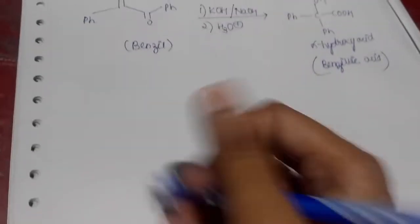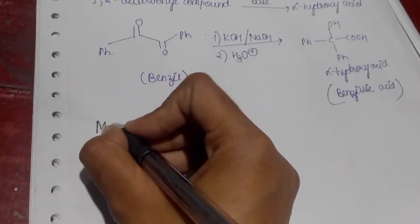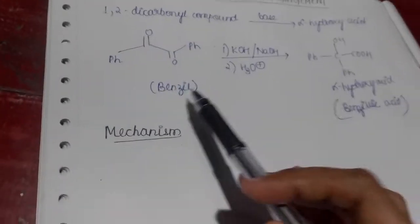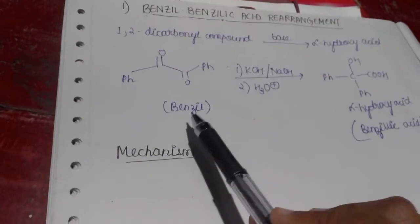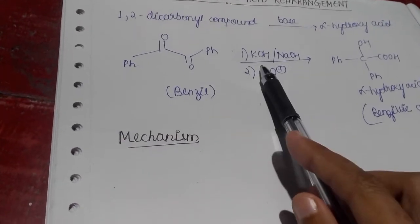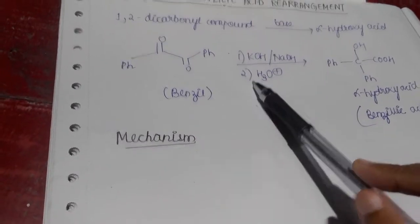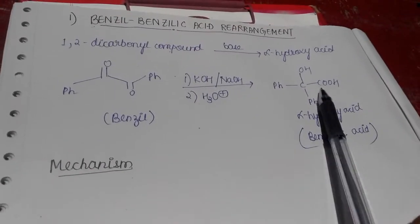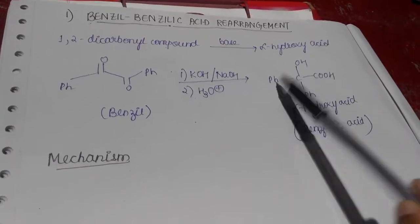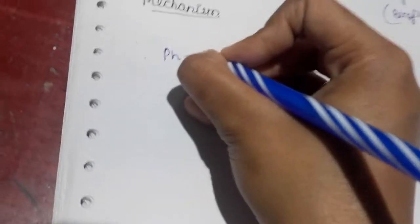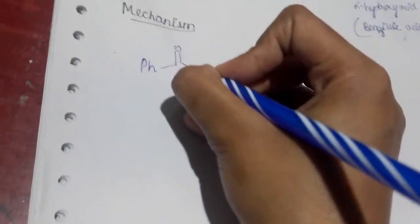So as the name suggests benzil to benzilic acid we get. If I try and explain the mechanism, this is like very simple. Let's just move on to the mechanism now. What basically happens here is if you take a 1,2-dicarbonyl compound and add a base to it, potassium hydroxide or sodium hydroxide, and then add H3O+, we will definitely get this alpha-hydroxy acid which is benzilic acid.